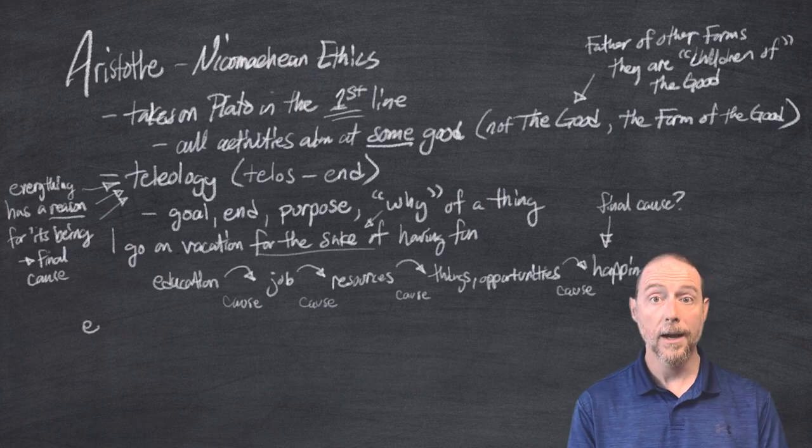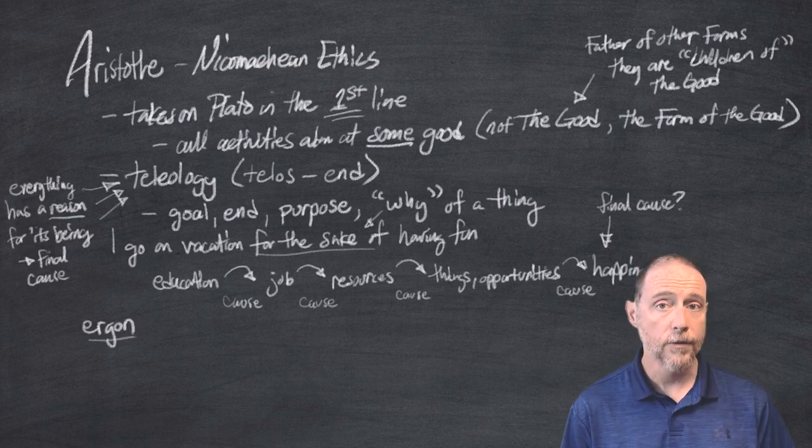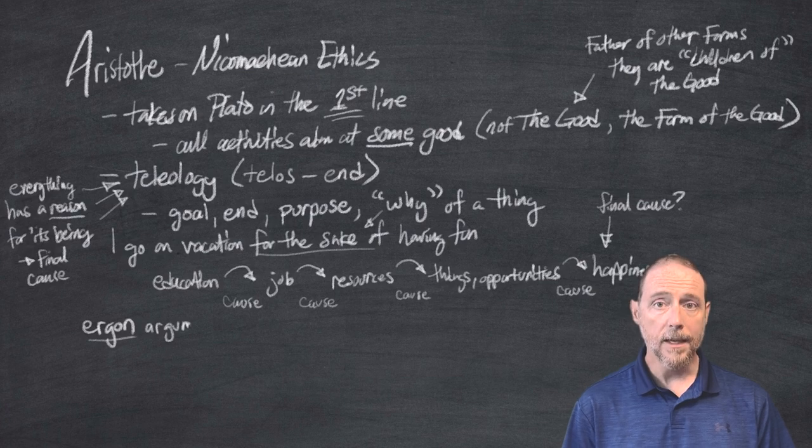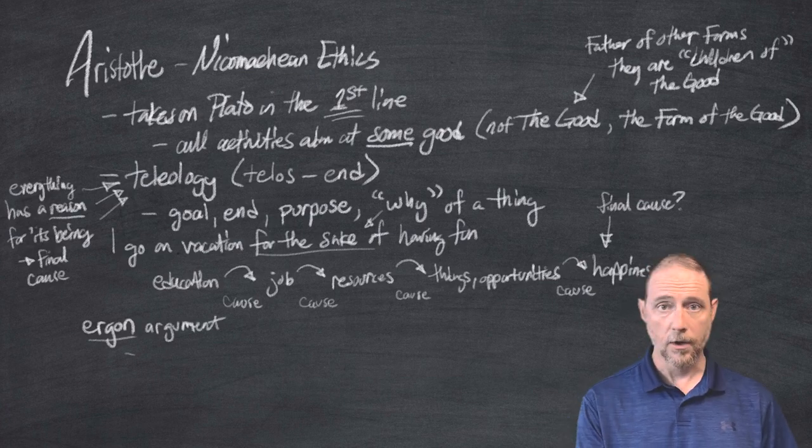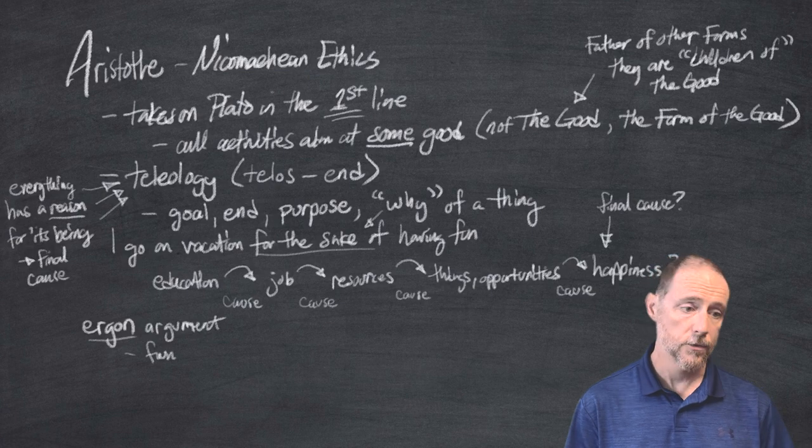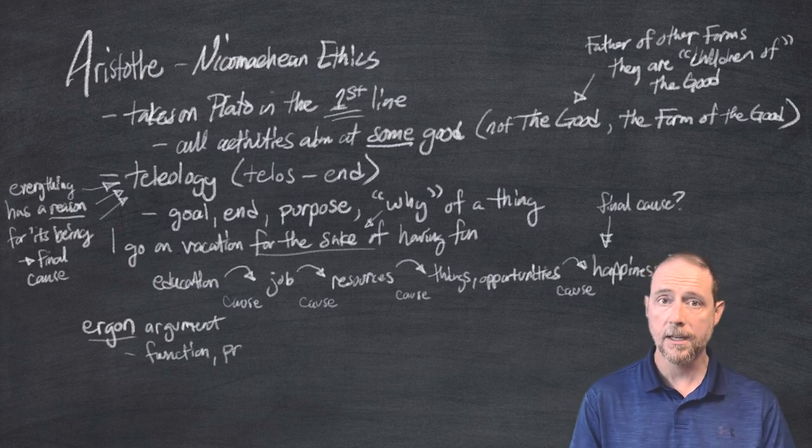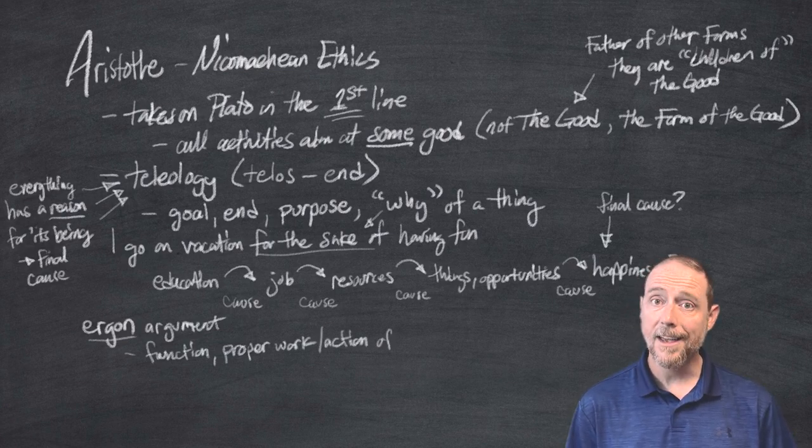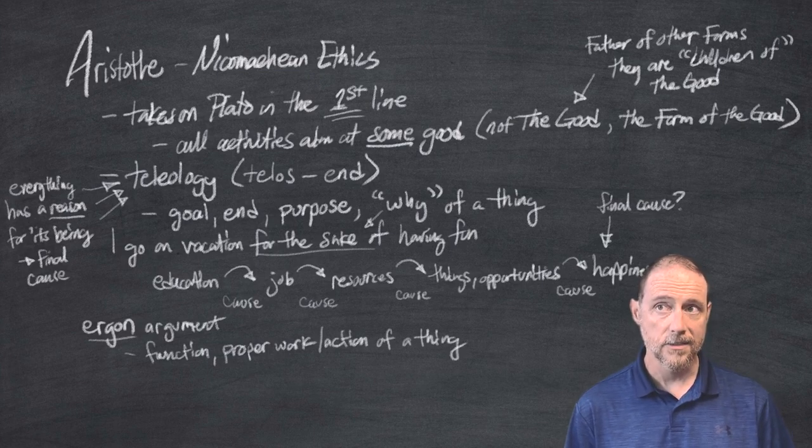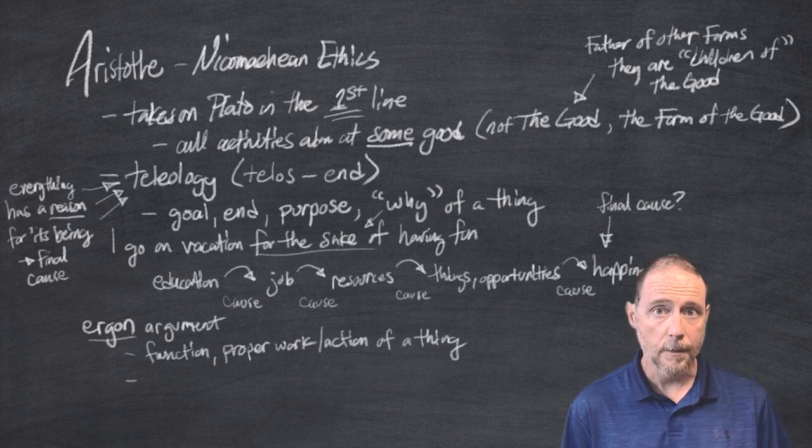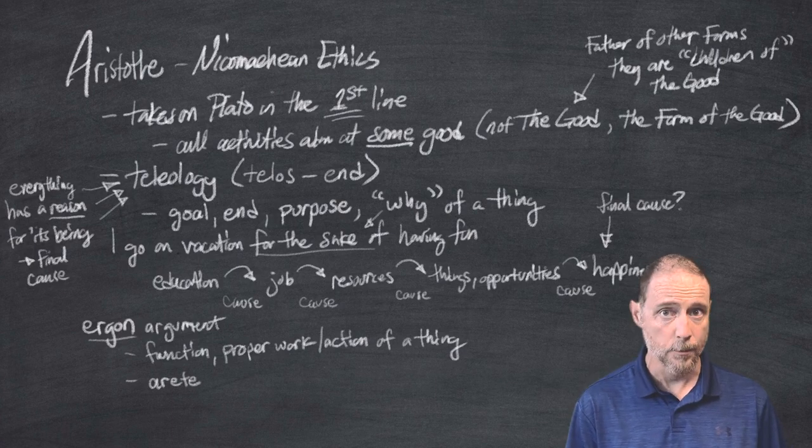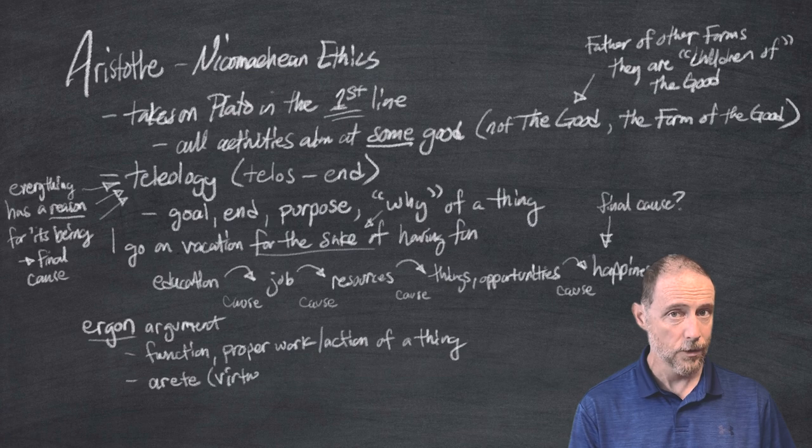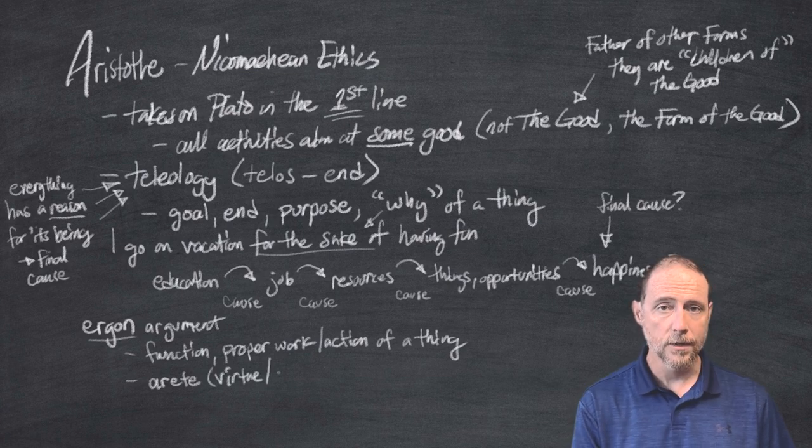This is what's called the ergon argument. The proper ergon, the proper work, activity, or function of a thing is its purpose. What is the final cause of a table so that I can set stuff on it? What is the final cause of a knife so that it can cut things? This is crucial for the ancient Greeks because their notion of virtue, arete, was excellence. What is excellence? Well, it's not just excellent at anything. A table could be a hammer, but it's not a very good hammer.